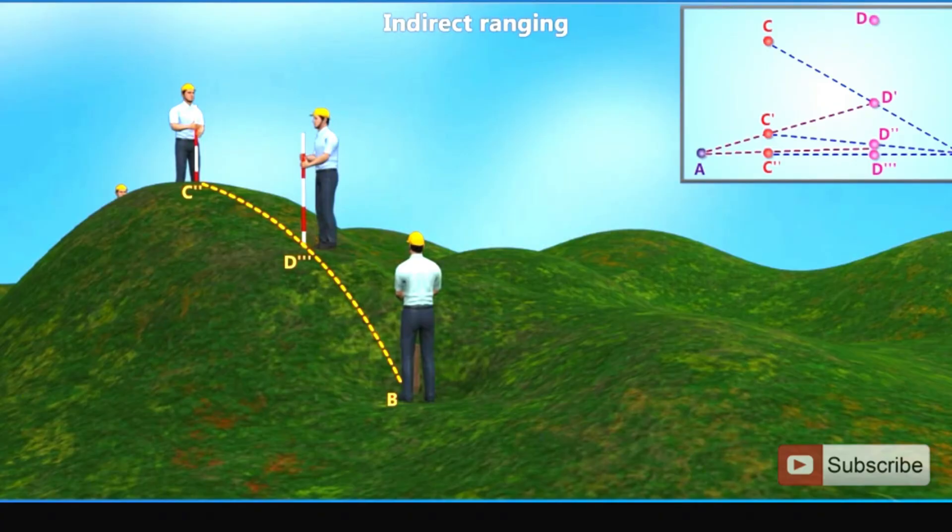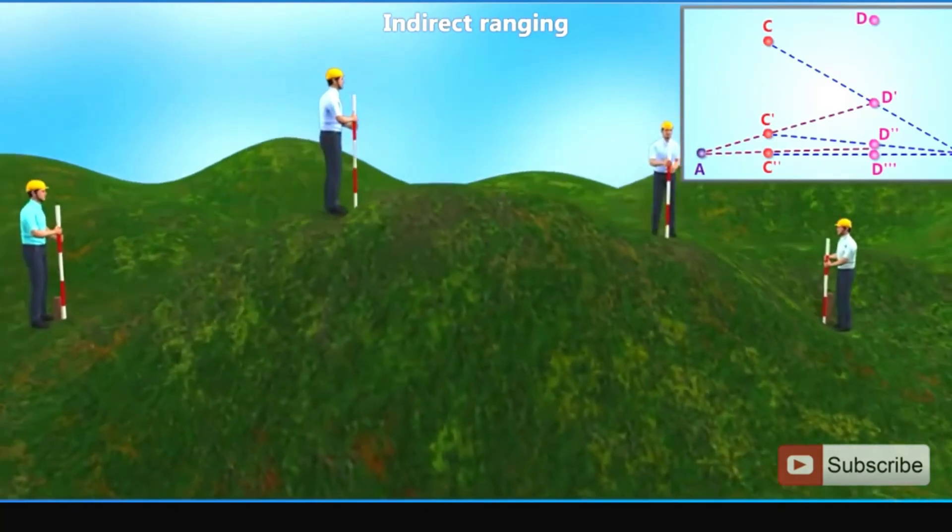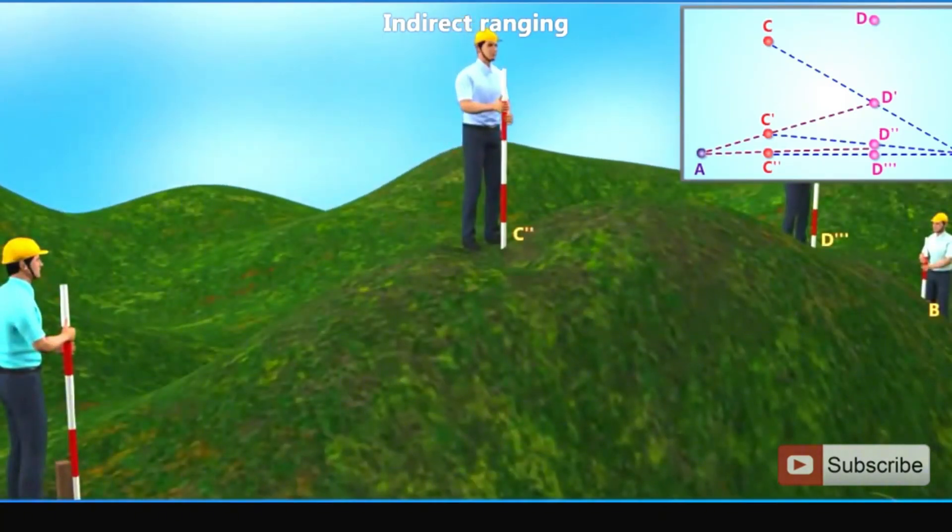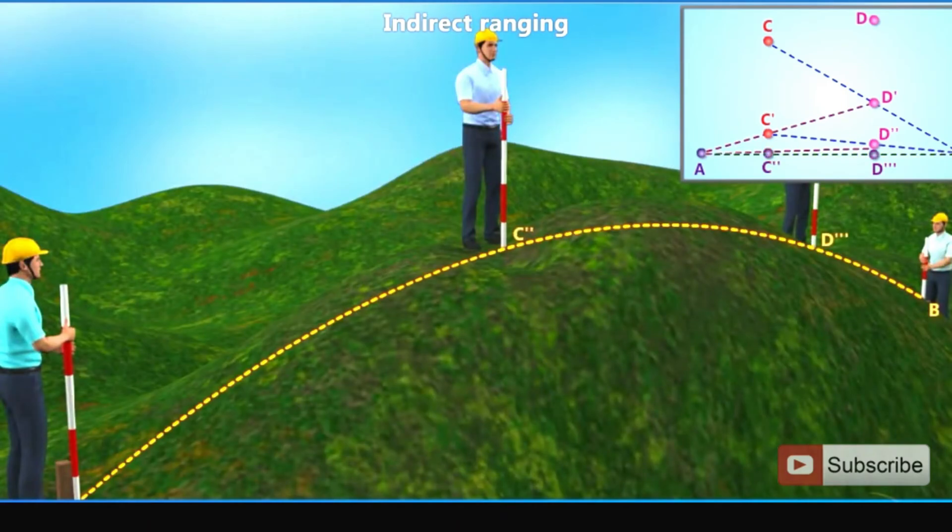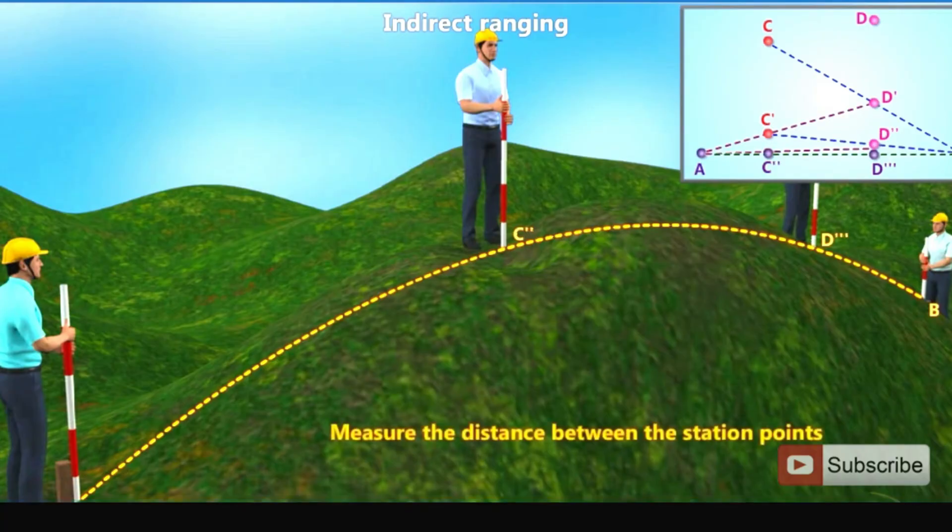By successive ranging and adjusting the station points, the desired straight line AC''B is obtained. Measure the distance between the station points.